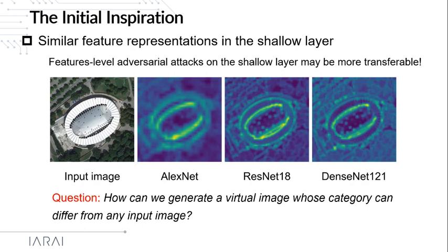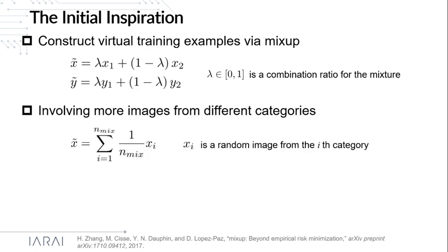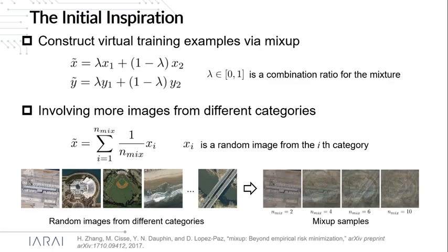A natural question is: how can we generate a virtual image whose category can differ from any input image? One possible way is to construct virtual training examples using MixUp. MixUp is originally a method used for data augmentation with a linear combination of two training samples. In our work, we further extend the original MixUp method by involving more images from different categories. The left figure shows random images from different categories, and the right figure shows the generated MixUp samples with different values of nMix.